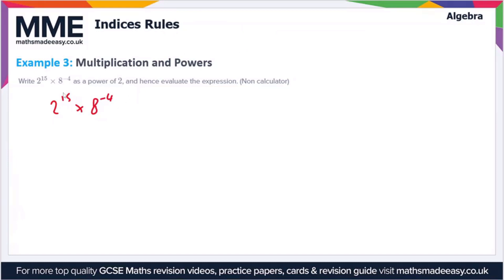So it looks complicated at first, but one thing you should know is that 2 cubed is equal to 8. So if we substitute this into our expression, then we get 2 to the 15 times 2 cubed, I'm going to write this in brackets, to the power minus 4.